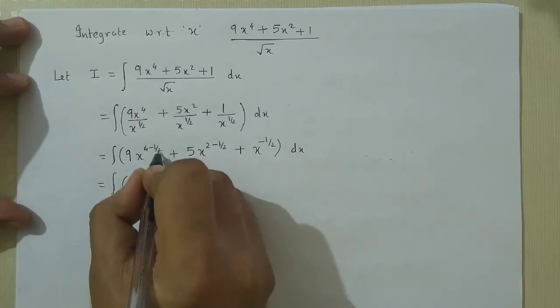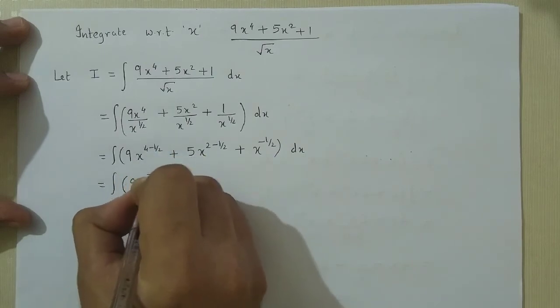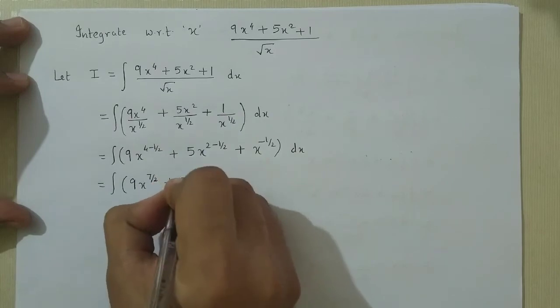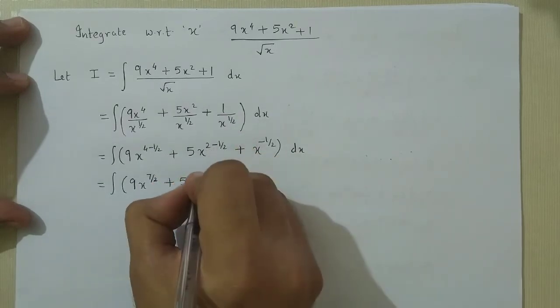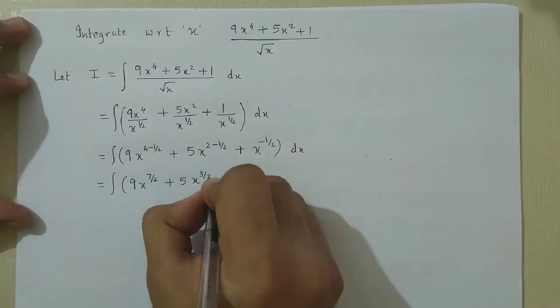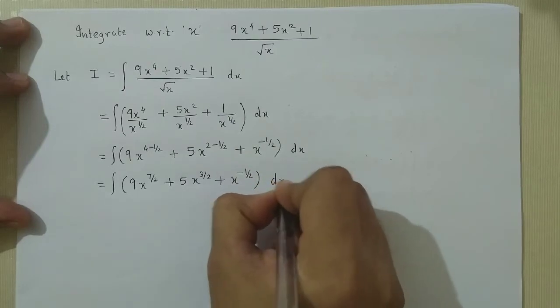9 times x raised to 7/2, since 4 minus 1/2 equals 8/2 minus 1/2 which is 7/2, plus 5 times x raised to 3/2, since 2 minus 1/2 equals 4/2 minus 1/2 which is 3/2, plus x raised to minus 1/2, dx.